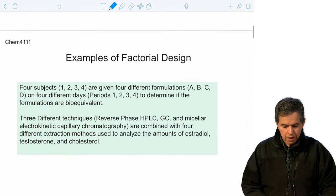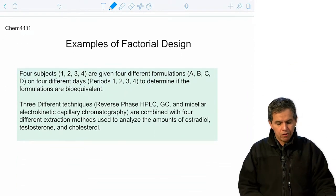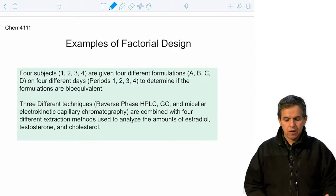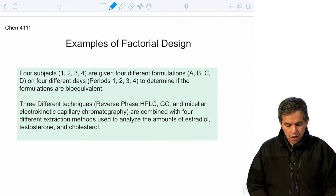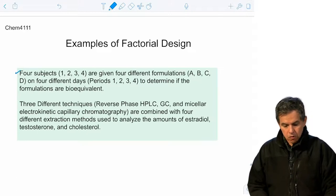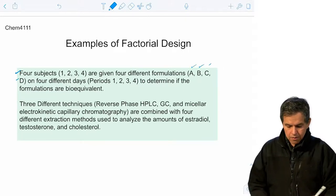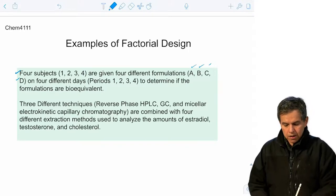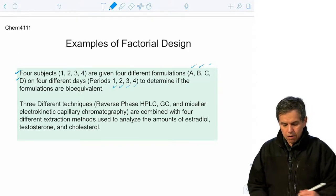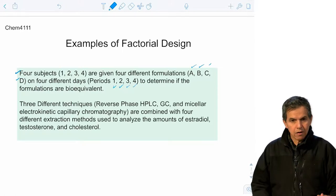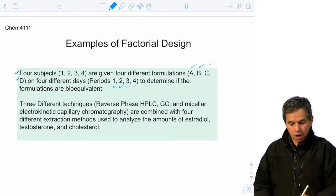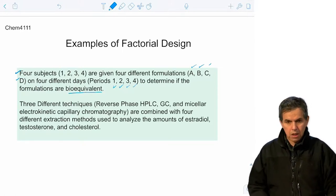A factorial design refers to a grid of measurements. One example is when we have four subjects given different formulations A, B, C, and D on four different days — periods 1, 2, 3, and 4 — to determine if the formulations have an effect, a pharmaceutical effect, or are bioequivalent on the individuals.